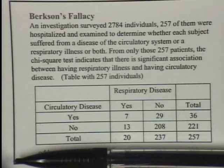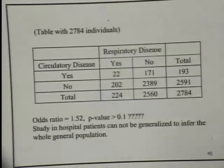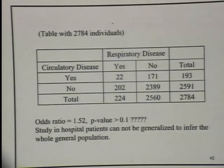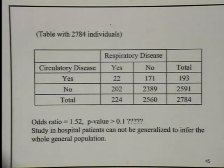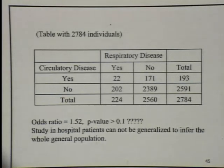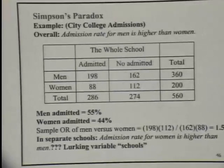Is it a good idea to generalize from hospital patients to the general population? No. When you include not just hospitalized patients but everyone, the chi-square test gives a p-value greater than 0.1 — so there's no significant correlation in the general population. The problem is that being seriously ill enough to be hospitalized is a confounder: if you're in terrible condition, you may have both diseases, but in the general population that may not be the case. You have to be careful about confounders in contingency table analysis.